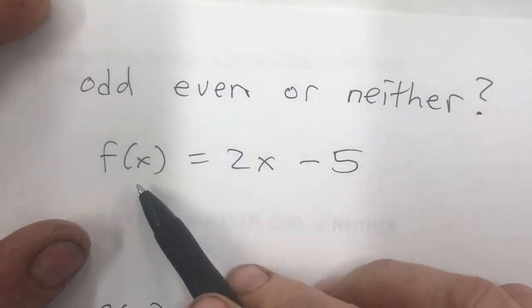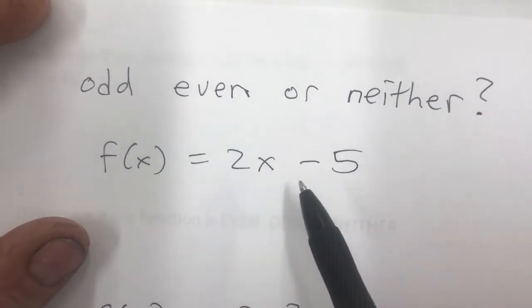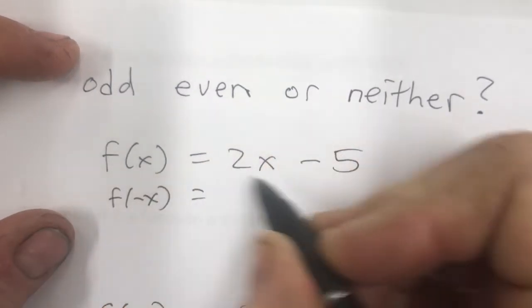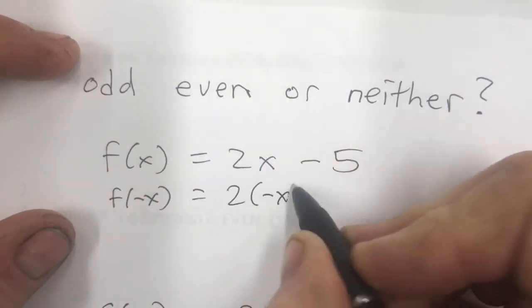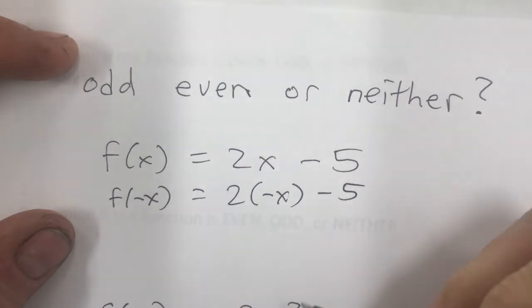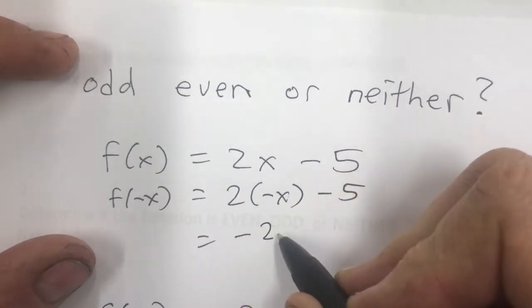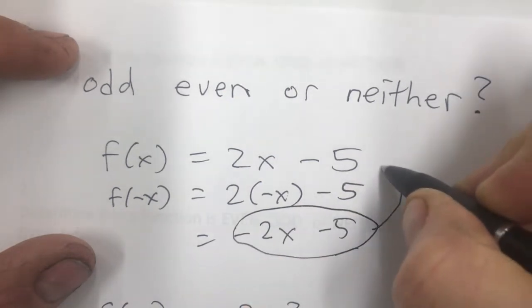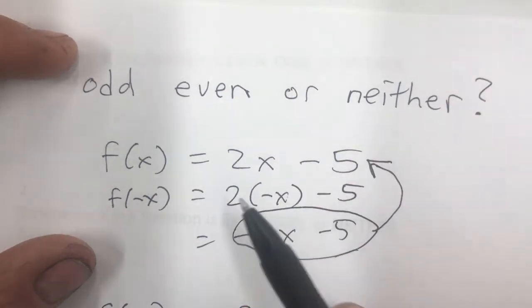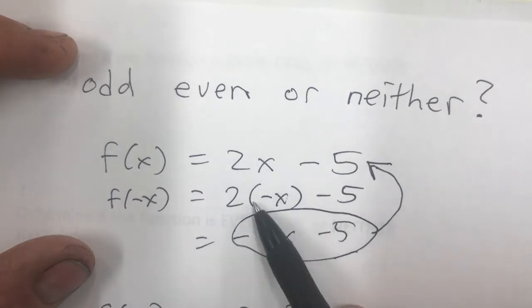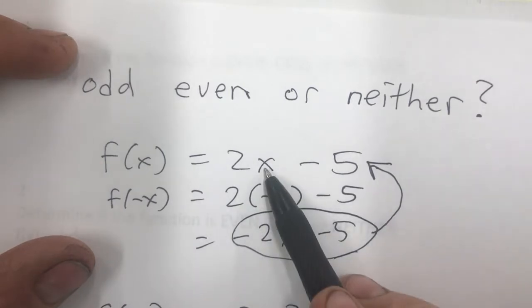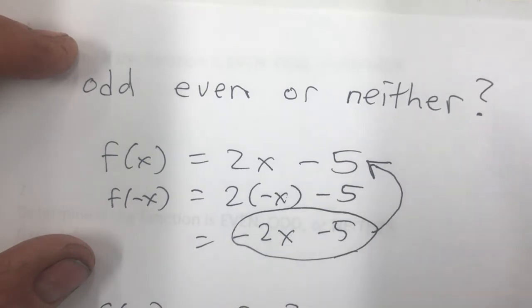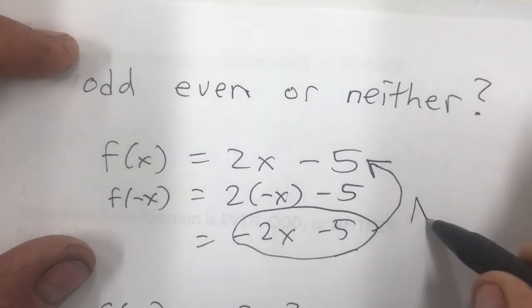First example: f(x) = 2x - 5. I'm going to find f of negative x by putting negative x in for x. I get negative 2x minus 5. Comparing that to the original — it's not the same thing because I have negative 2x instead of 2x, and it's not the opposite either. So this is neither.